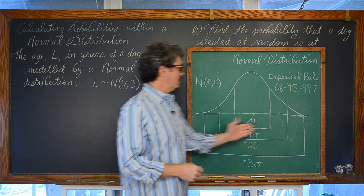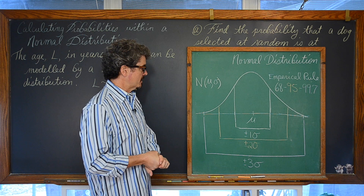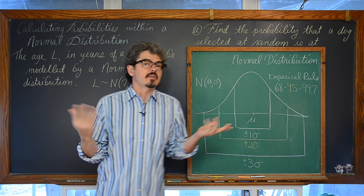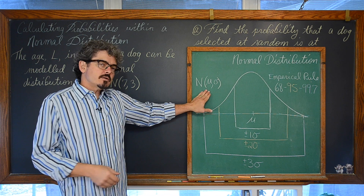This bell curve goes on forever in each direction — the x-axis is basically acting as an asymptote. So you can have a piece of data that is three, four, five, or six standard deviations away from the mean. It just becomes very, very unlikely.